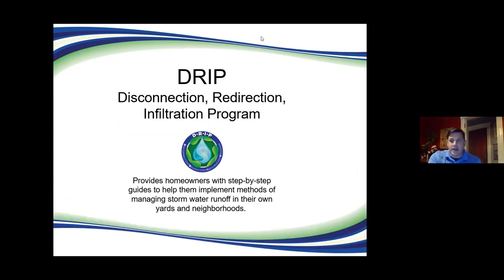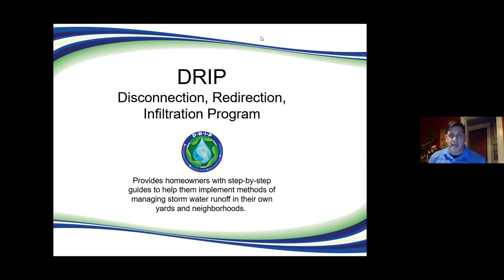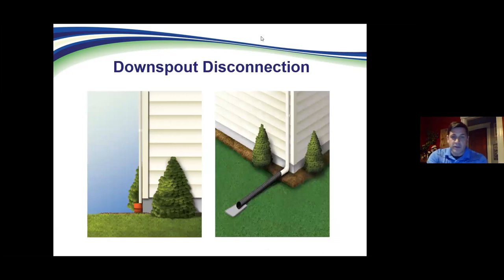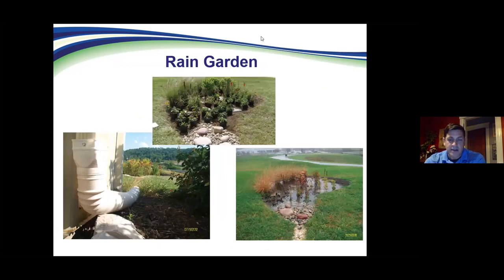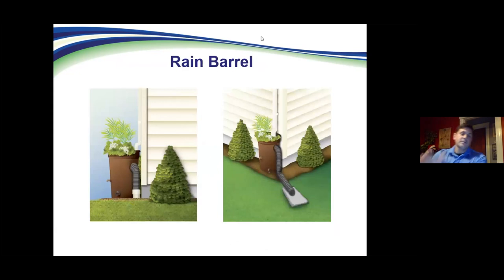Thank you, Liz. We're going to get into DRIP — the Disconnection, Redirection, and Infiltration Program. SD1, Sanitation District Number One, put this together a few years back. It's basically guidance documents on how to disconnect your downspout, redirect it, and either install a rain barrel or rain garden — or both. We're going to walk through the downspout disconnection piece. You can just disconnect and allow the water to run off into your yard, or tie it into a rain barrel or rain garden — we've even seen rain barrels discharging into rain gardens.